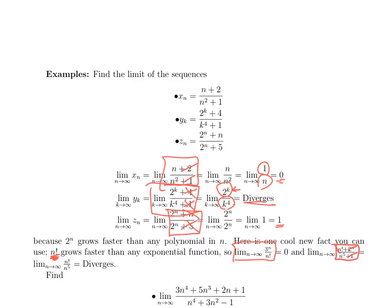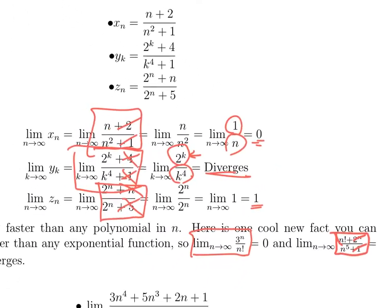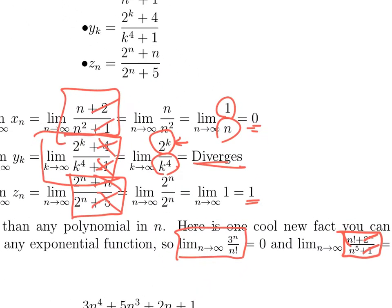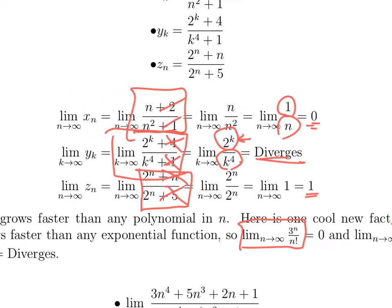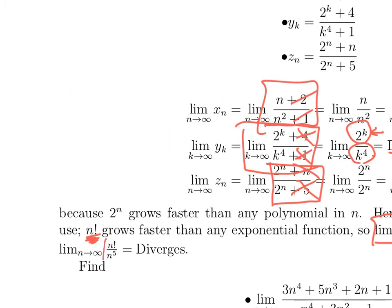If you see an expression like (n! + 2^n)/(n^5 + 1), the 2^n gets completely overwhelmed by n factorial, and the 1 gets completely overwhelmed by n^5. So this behaves like n!/n^5. The top grows faster, so it diverges.